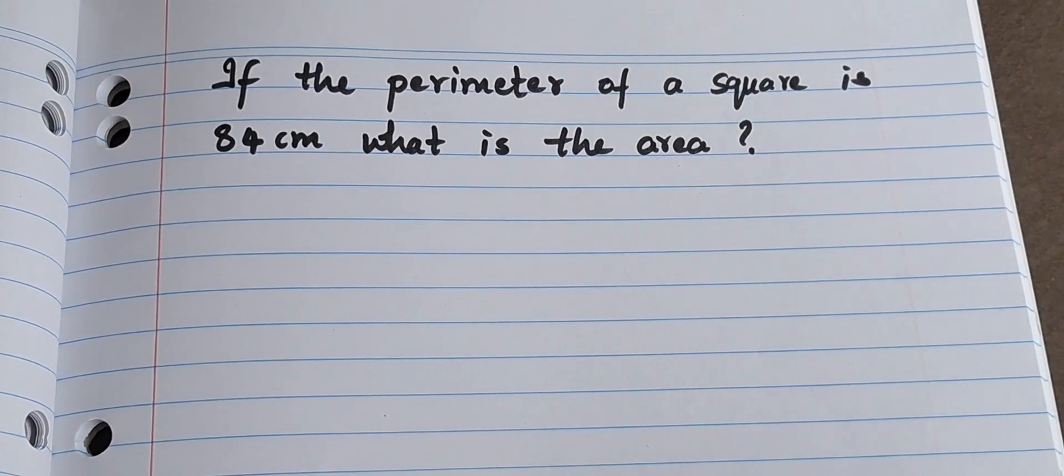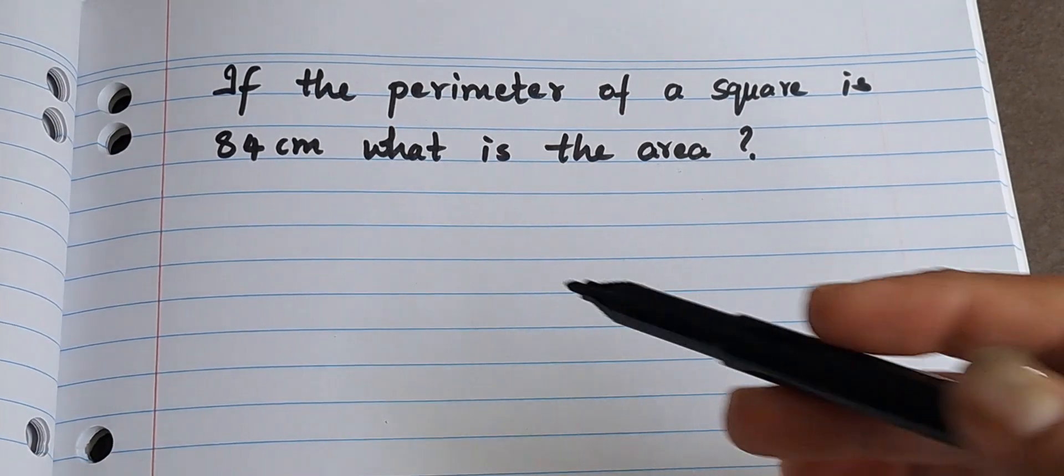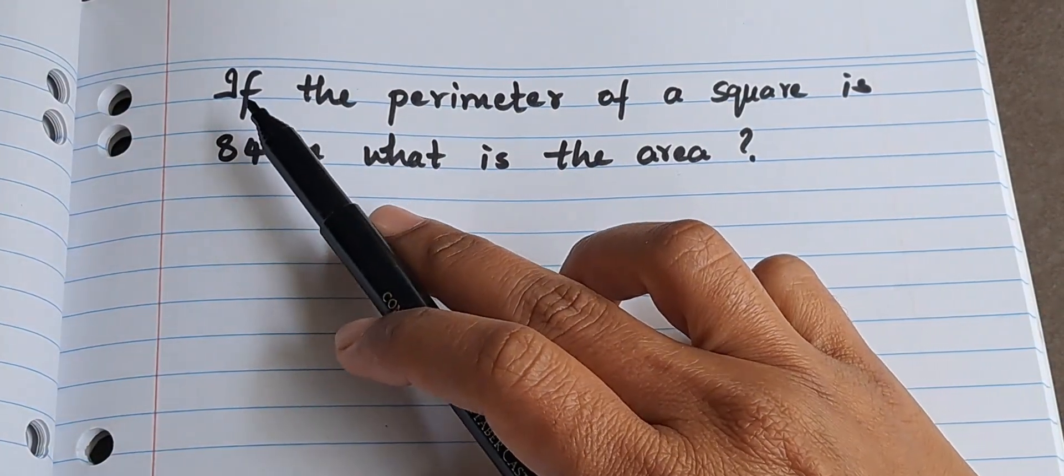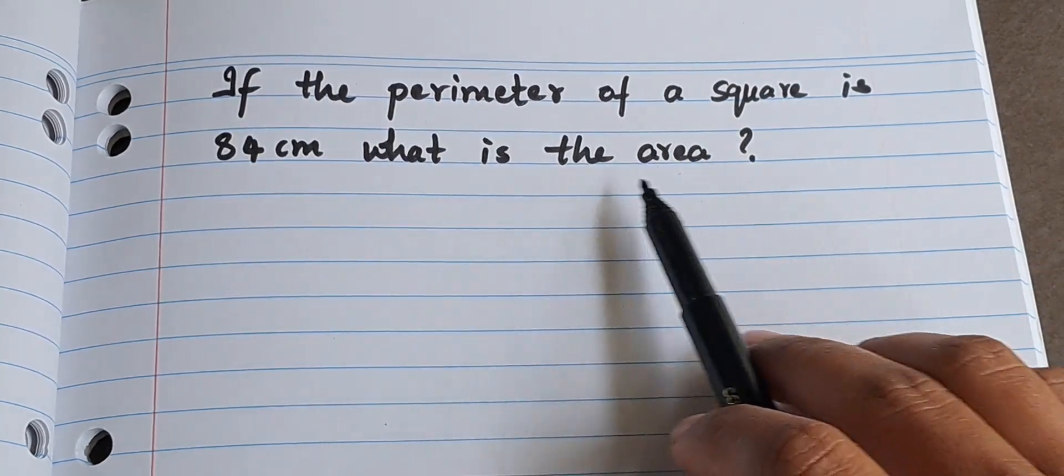Hello everyone, today we are going to find the area of a square whose perimeter is given. Here the question goes like this: if the perimeter of a square is 84 centimeters, what is its area?